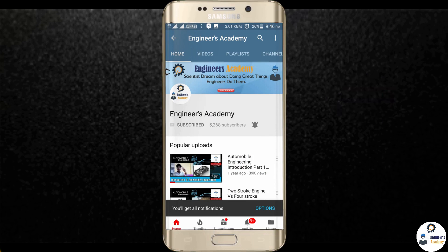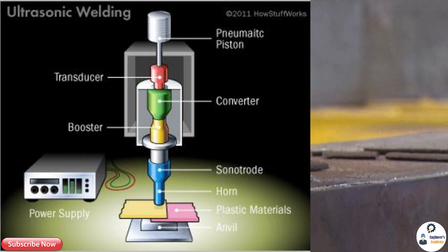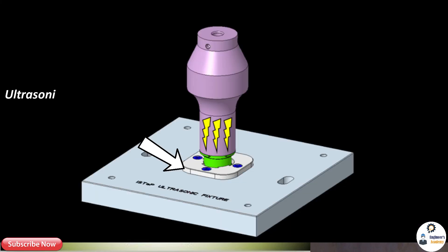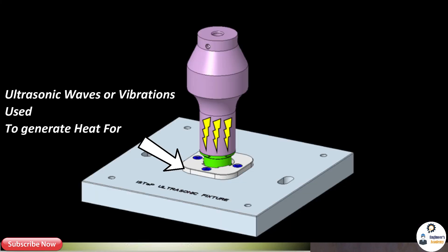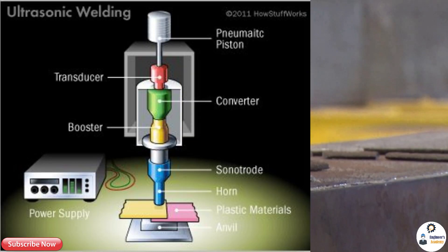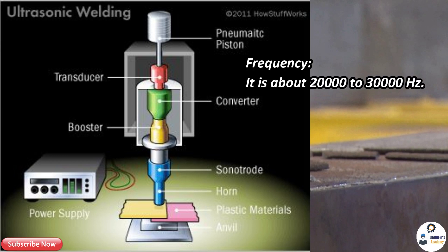Ultrasonic welding is a welding process in which ultrasonic waves or vibrations are used to generate heat for welding. Ultrasonic means those vibration waves which have frequency above the normal hearing range — it is about 20,000 to 30,000 hertz. It is a solid state welding process.